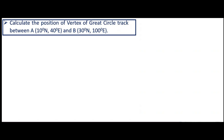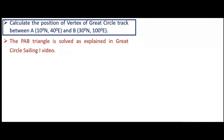For the great circle track between position A, 10 degrees north, 40 degrees east, and position B, 30 degrees north, 100 degrees east — this question for the GC distance, initial and final course has already been solved in our video one. So the PAB triangle formation and calculation of angle A and B has been done therein. We'll pick up the values of A and B from there.